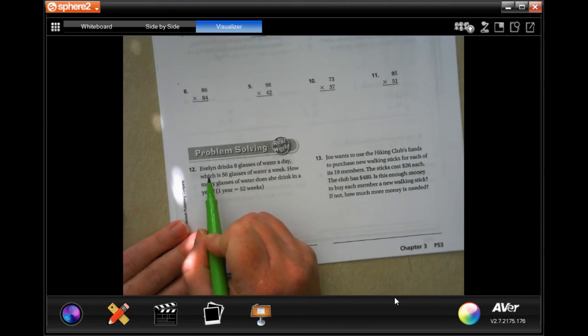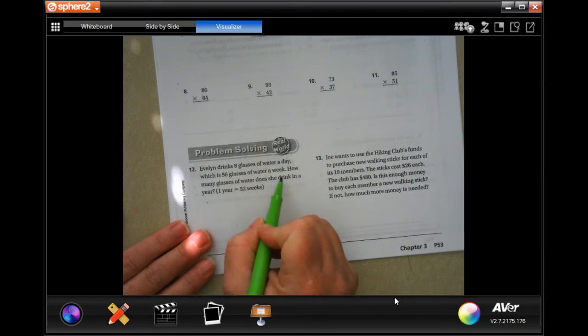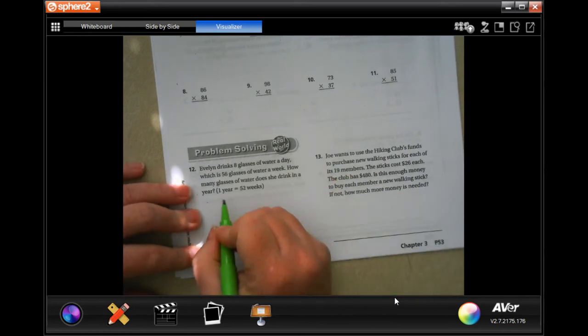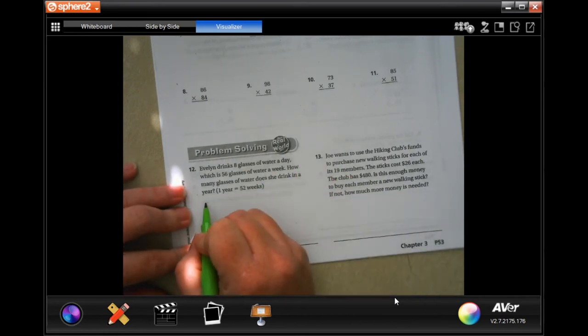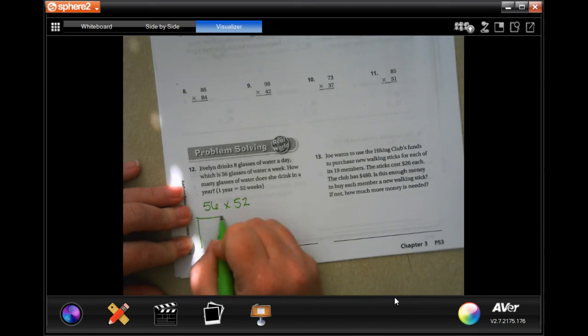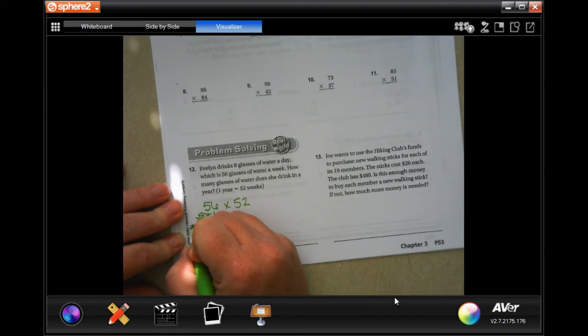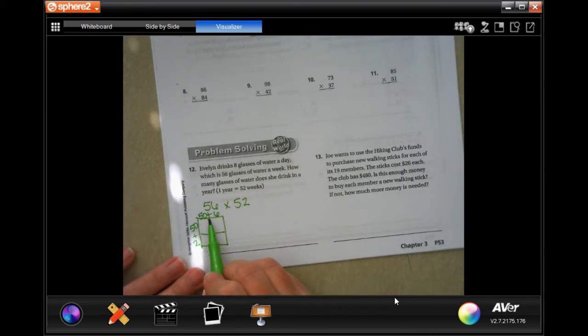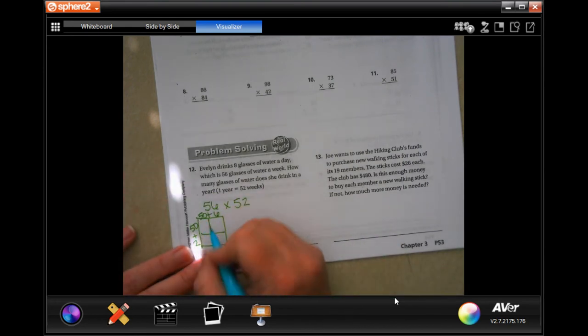We're going to go down to number 12. It says, Evelyn drinks 8 glasses of water a day, which is 56 glasses of water a week. How many glasses of water does she drink in a year? And it gives you a hint that one year is 52 weeks. And that means that 56 is going to be multiplied by 52. So I'm going to draw my box.